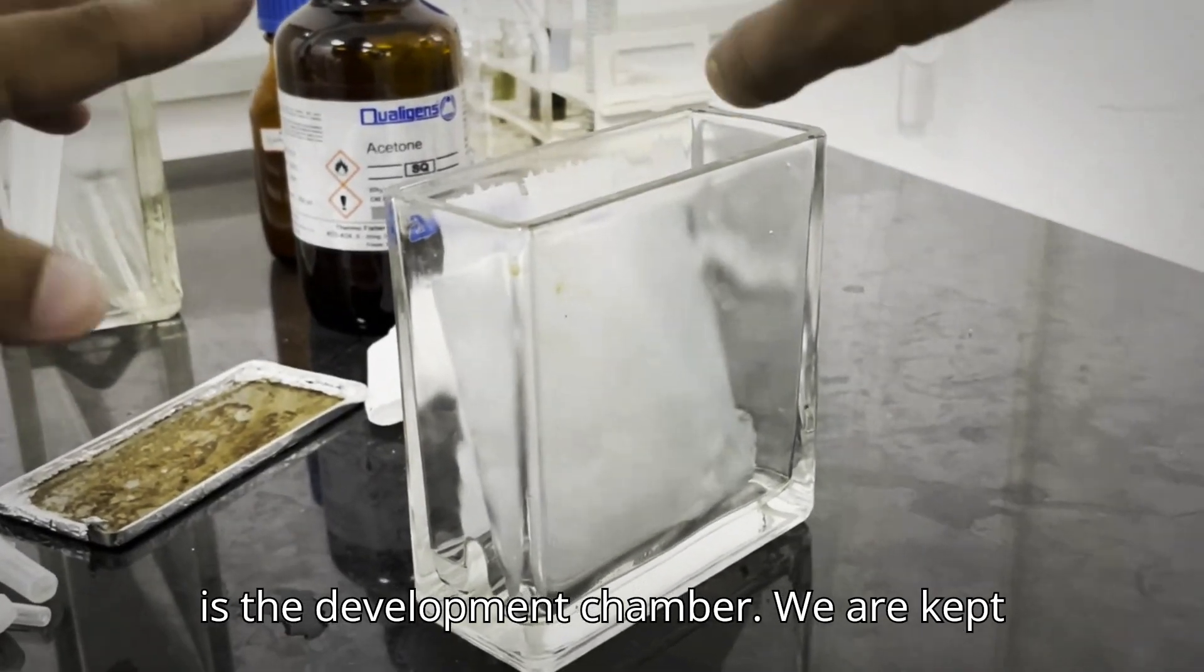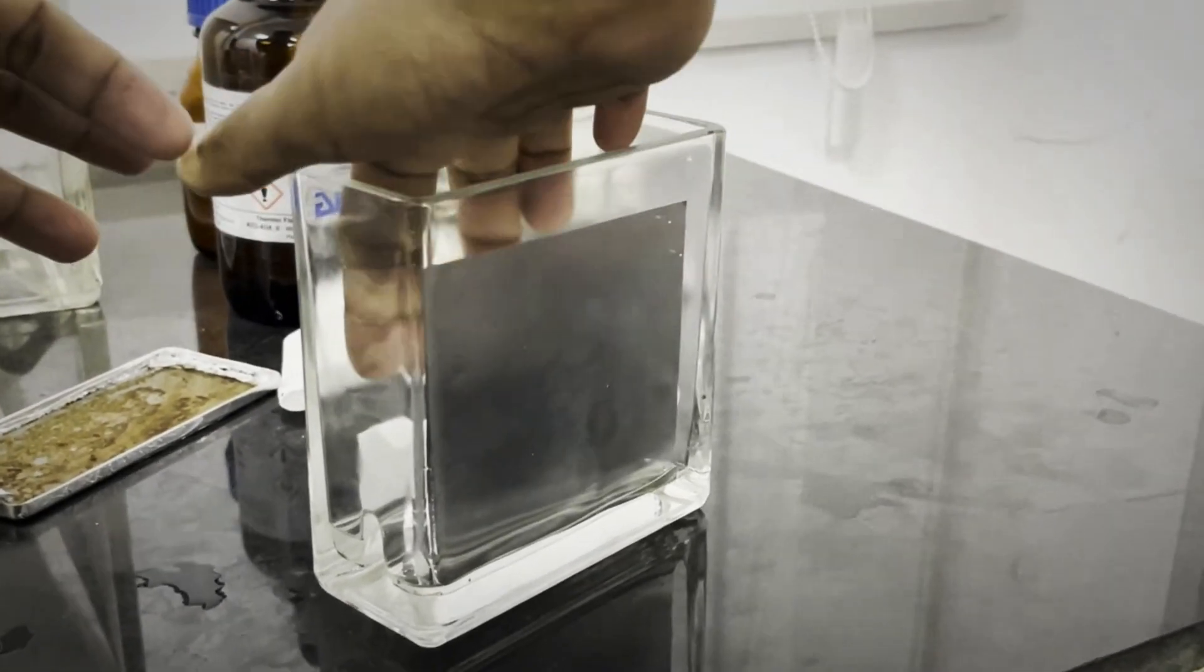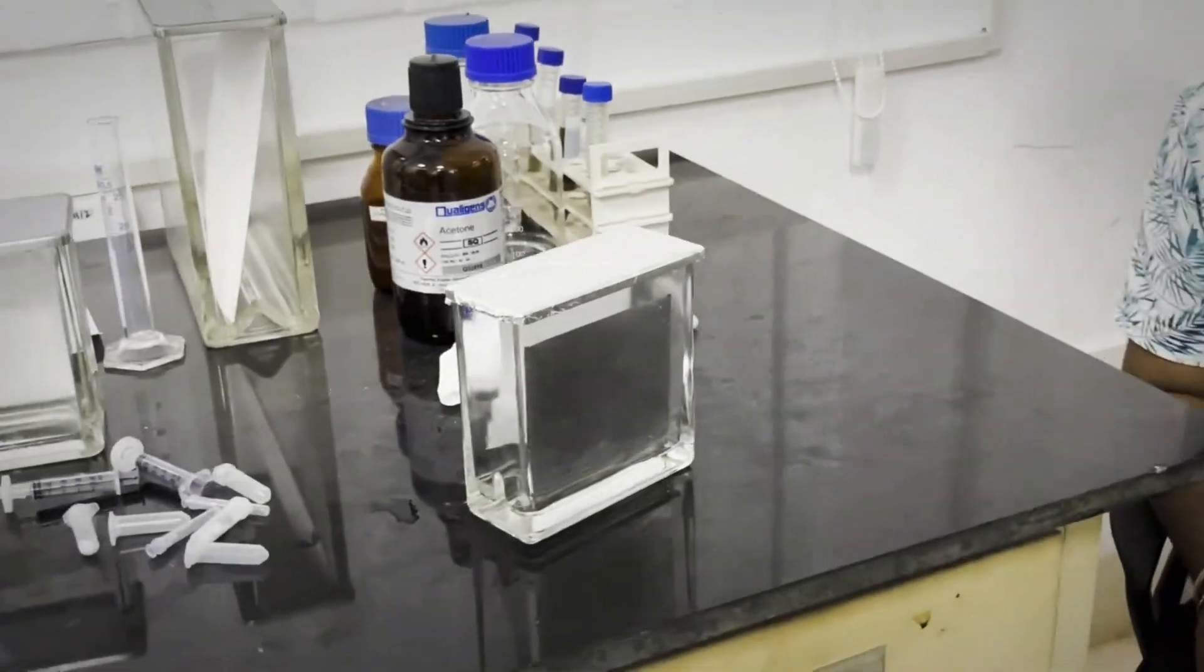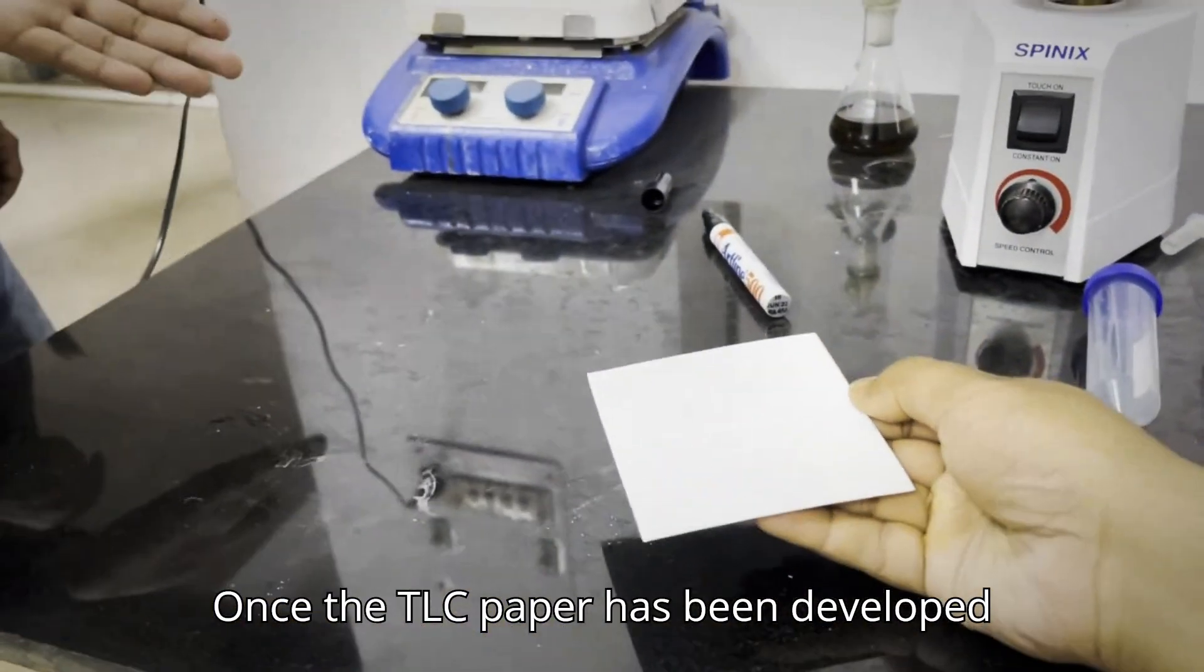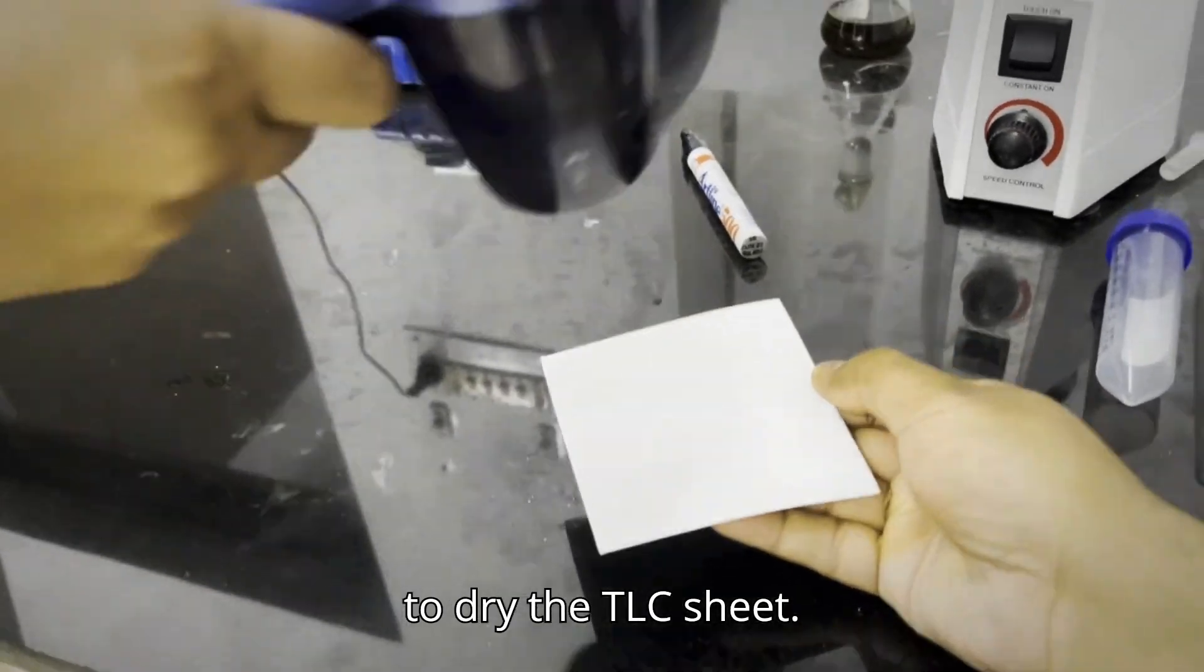Here is the development chamber. We are keeping the TLC sheet over here. Once the TLC paper has been saturated 80%, now we are going to dry the TLC sheet.